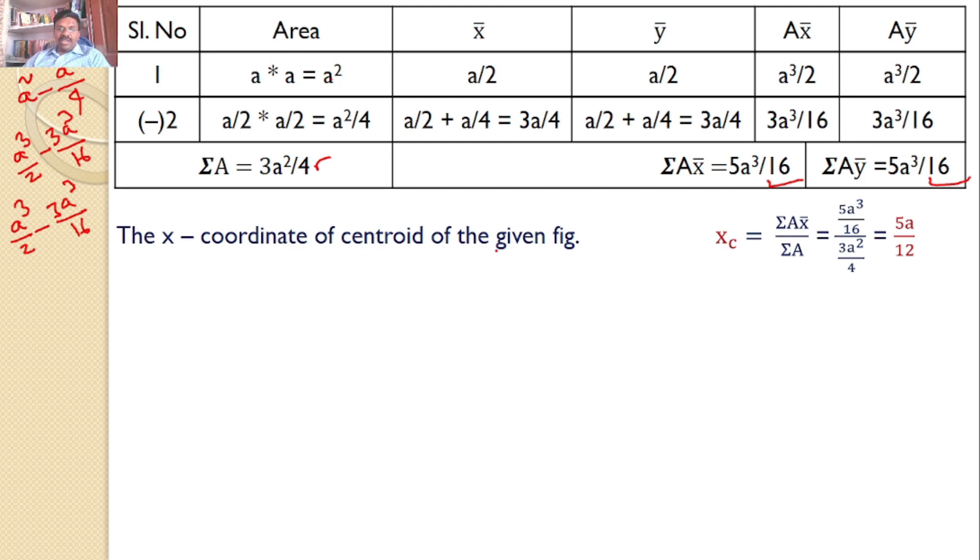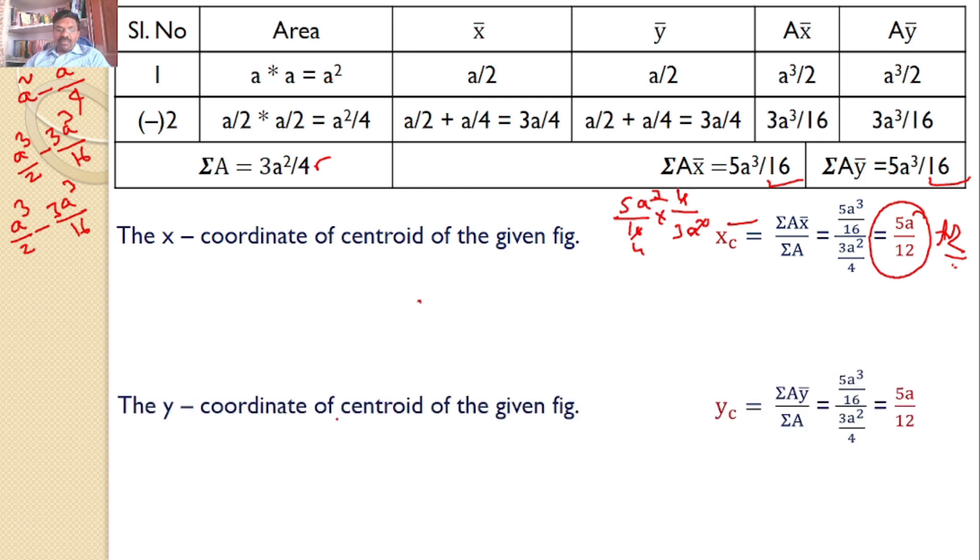Now the centroid equation: sigma A X bar by sigma A is 5A cubed by 16 divided by 3A squared by 4. That means 5A cubed by 16 times 4 by 3A squared. After cancellation, we get 5A by 12 as the X coordinate answer for the three-quarters of the square of size A. The Y coordinate of the centroid is once again sigma A Y bar by sigma A, giving the same answer: 5A by 12. So X bar and Y bar are both 5A by 12.